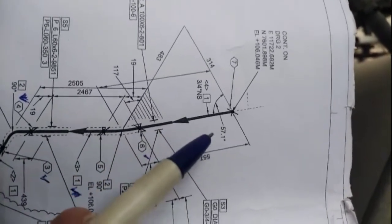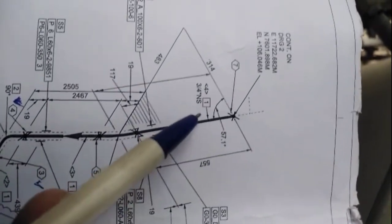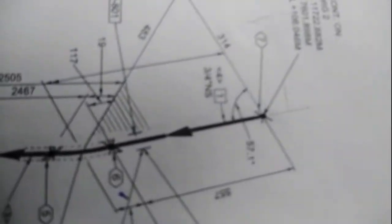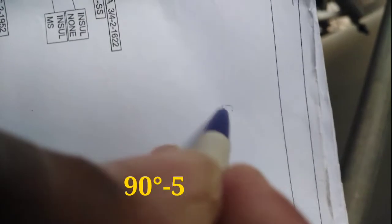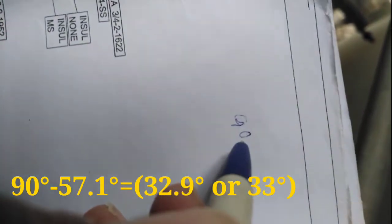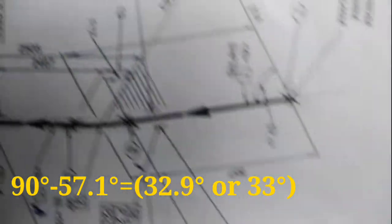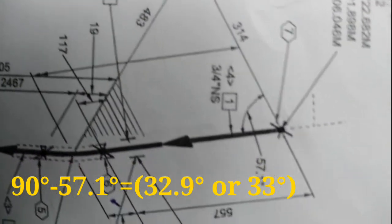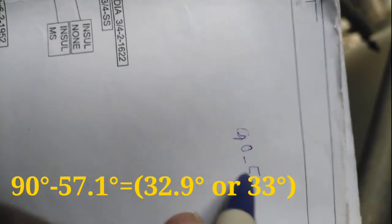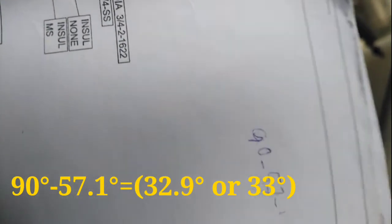So it's very easy. If this 57.1, for example, 90, alright. So 90 minus how much is the degree? This is 57.1.